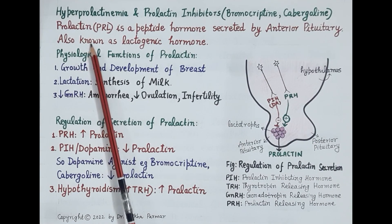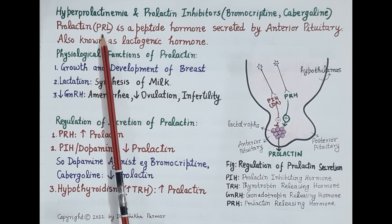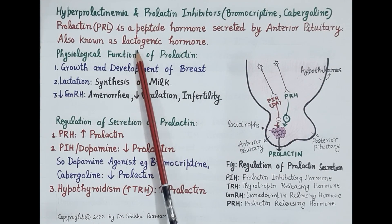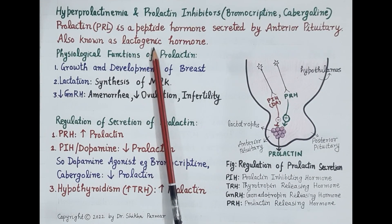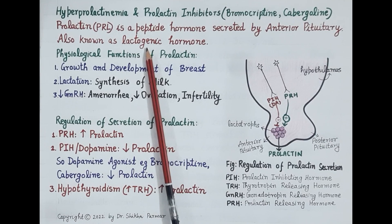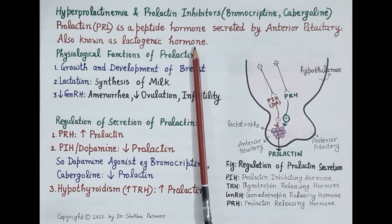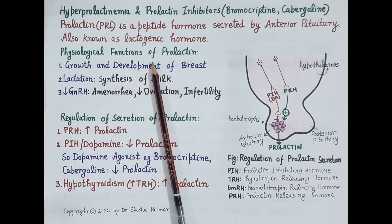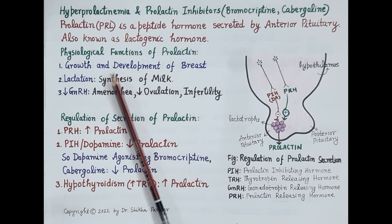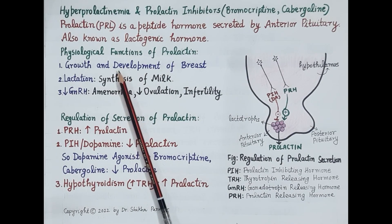As we have already studied in our previous video, prolactin, in short PRL, is a peptide hormone secreted in the blood by the anterior pituitary. Lacto refers to milk and genesis means synthesis. So as prolactin is required for the synthesis of milk by the mammary glands or the breast, it is also called the lactogenic hormone. Prolactin is responsible for inducing growth and development of the breast during pregnancy, as it prepares the breast for the synthesis of milk postpartum after delivery.